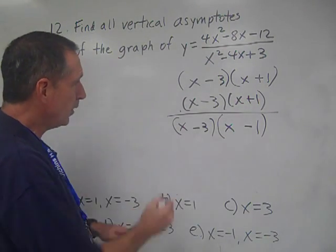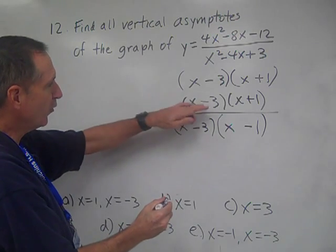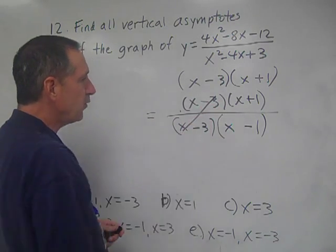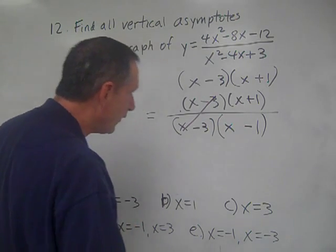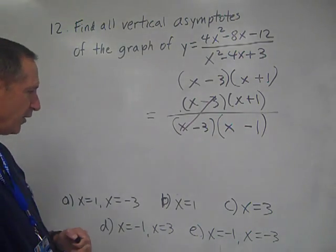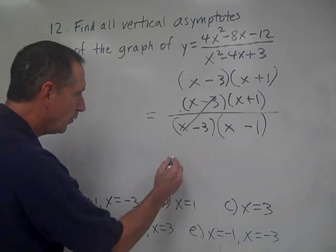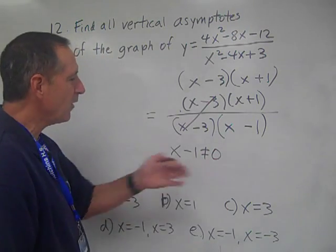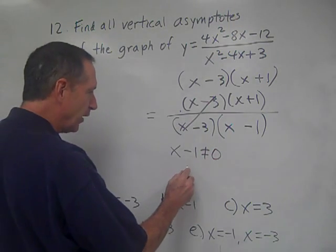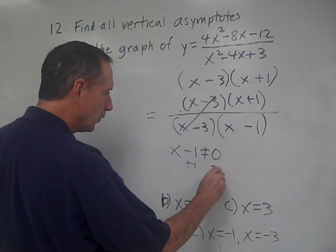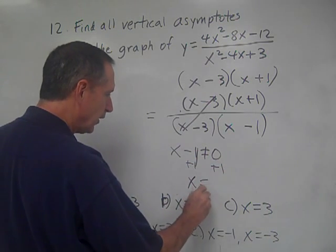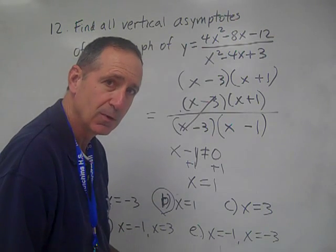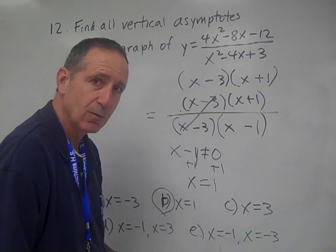And so what we have here is, do we have a removable discontinuity? Yeah, these two will cancel out, and so this is what we have left. So what is our vertical asymptote going to be? We have x - 1 = 0, which means it cannot equal 0. That's the vertical asymptote. We add 1, so x = 1, and therefore b will be our correct answer.